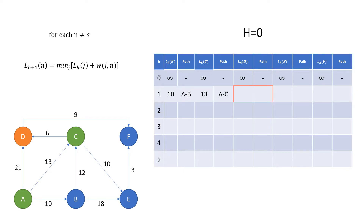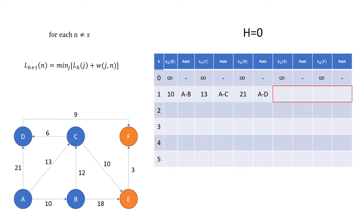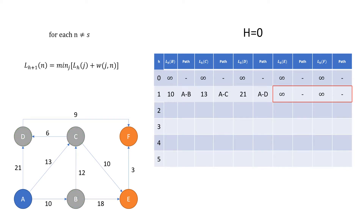Continuing on to node d, we can see the predecessors are nodes a and c. For the same reasons given with node c, we can see that the only viable predecessor is node a. Performing the same calculation, we can see that the current best path route length for node d is 21, and the path is directly from node a to node d. Continuing on to nodes e and f, we can see that their only predecessors again have infinite length routes. We can therefore carry the infinite values down from the previous row as we have not yet found a better value. This concludes our calculations for h equals 0.